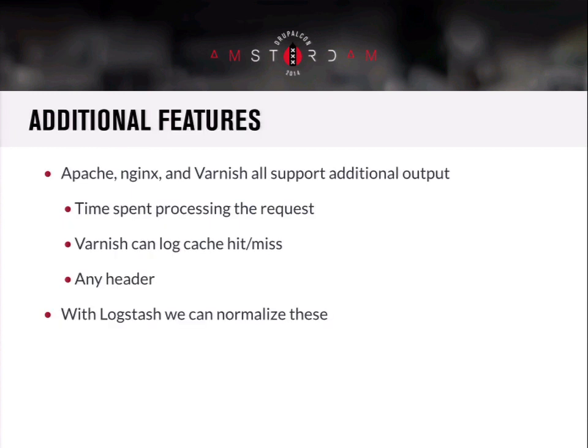Apache, Nginx, and Varnish all support additional types of output to grab extra information. One thing all three can track is the amount of time taken to process the request. Varnish can also track cache hits or misses if you're logging to NCSA format. All of them can also just output any header you want. Varnish can be very verbose, especially at 95-98% hit rates, so you may not always be able to capture Varnish logs to disk. Later we'll look at how Logstash can normalize all these things to provide consistent milliseconds for each request.